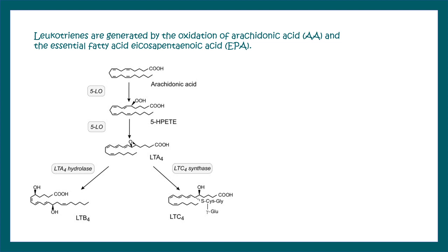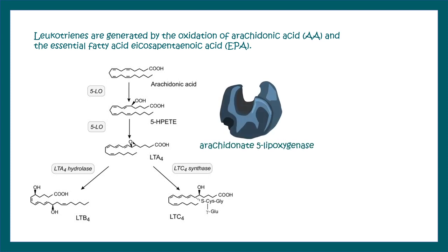Leukotrienes are generated by oxidation of arachidonic acid. Looking at the pathway, arachidonic acid is oxidized into an intermediate known as 5-HPETE, and then it is ultimately converted to leukotriene A4. From leukotriene A4, they are further converted to leukotriene B4 and C4. The key enzyme to understand in this pathway is arachidonate 5-lipoxygenase.